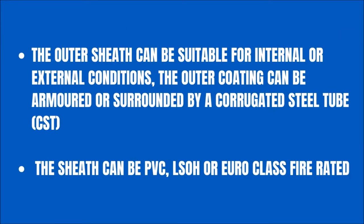The outer sheath can be suitable for internal or external conditions. The outer coating can be armored or surrounded by a corrugated steel tube. The sheath can be PVC, LSOH, or Euro-class fire rated.